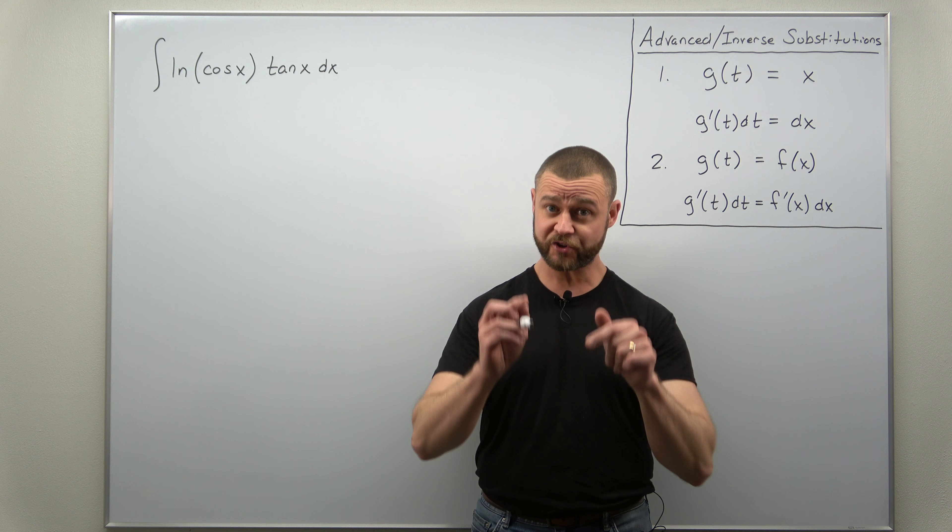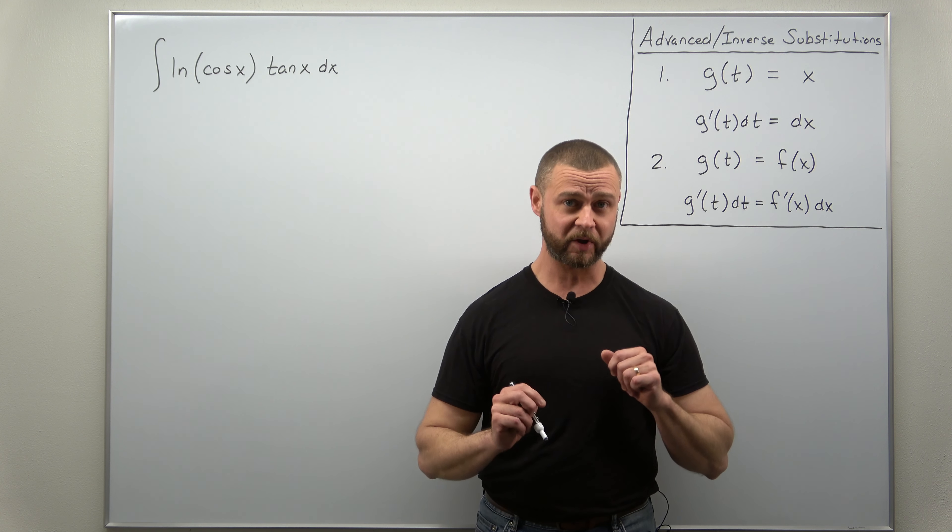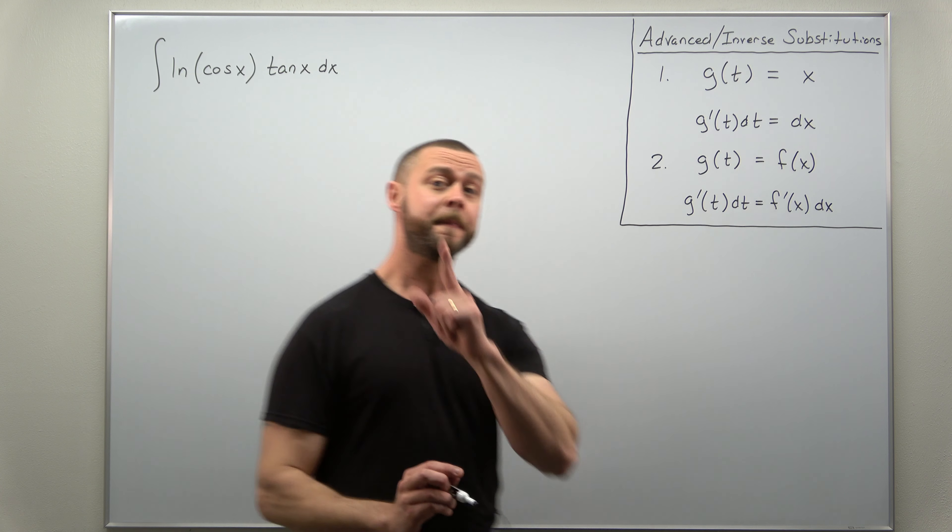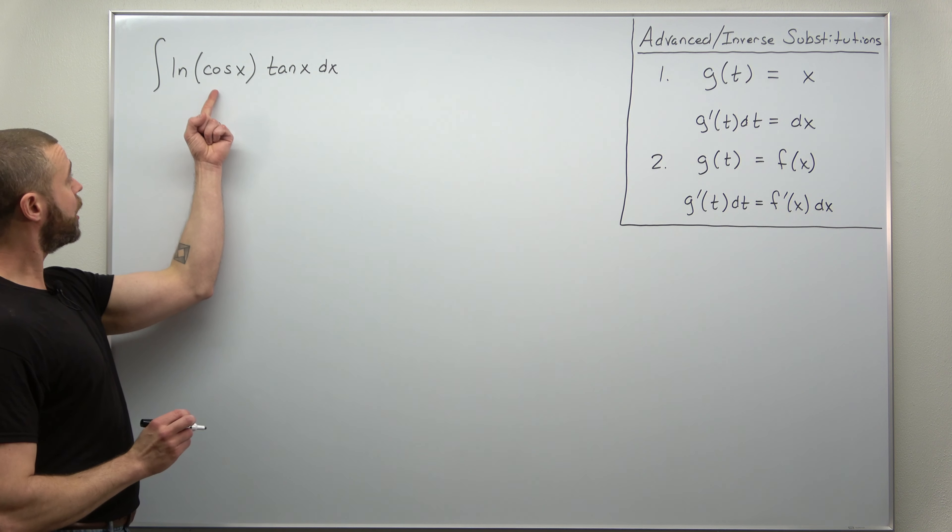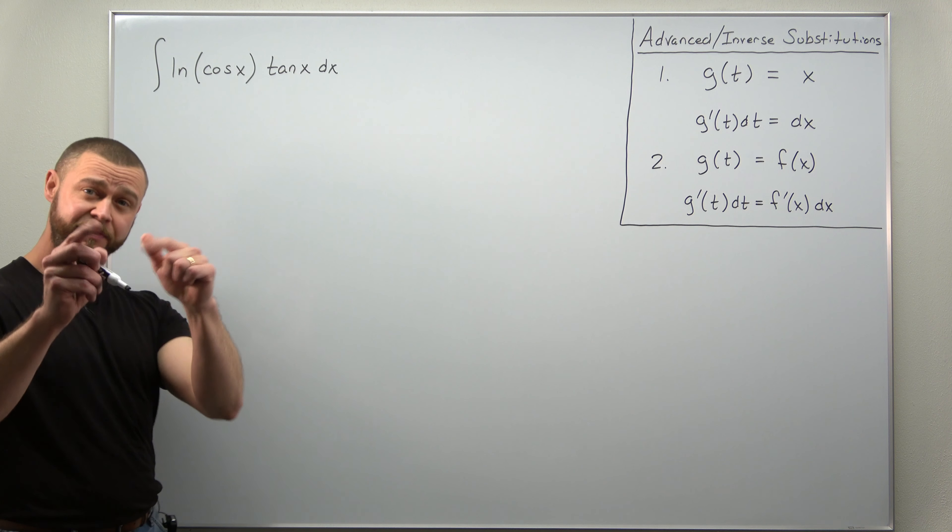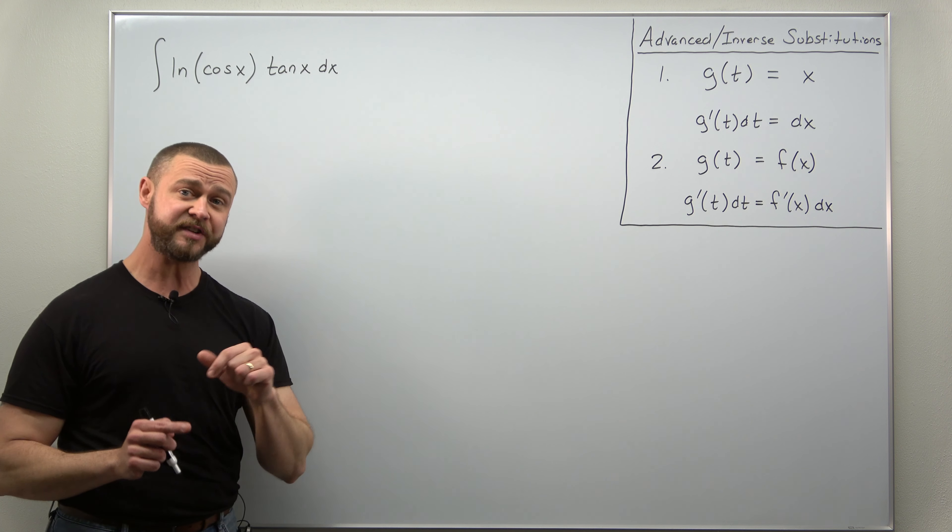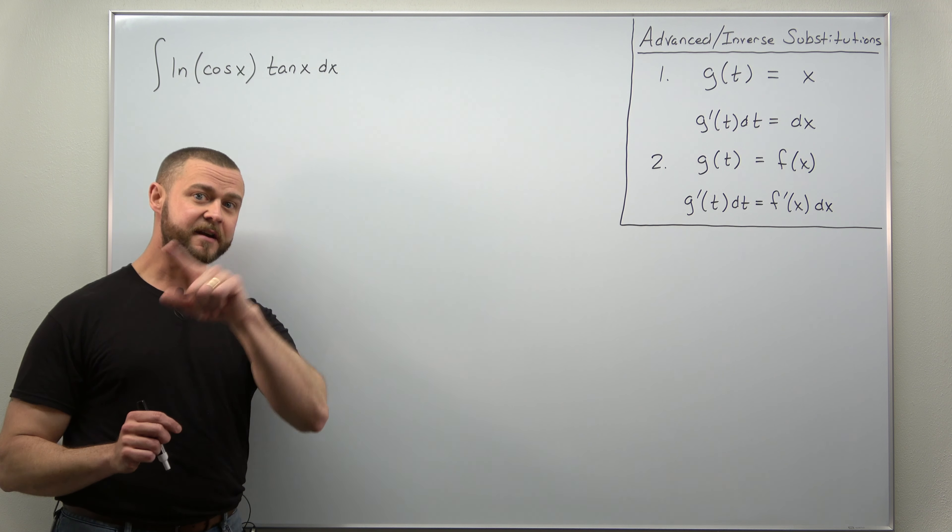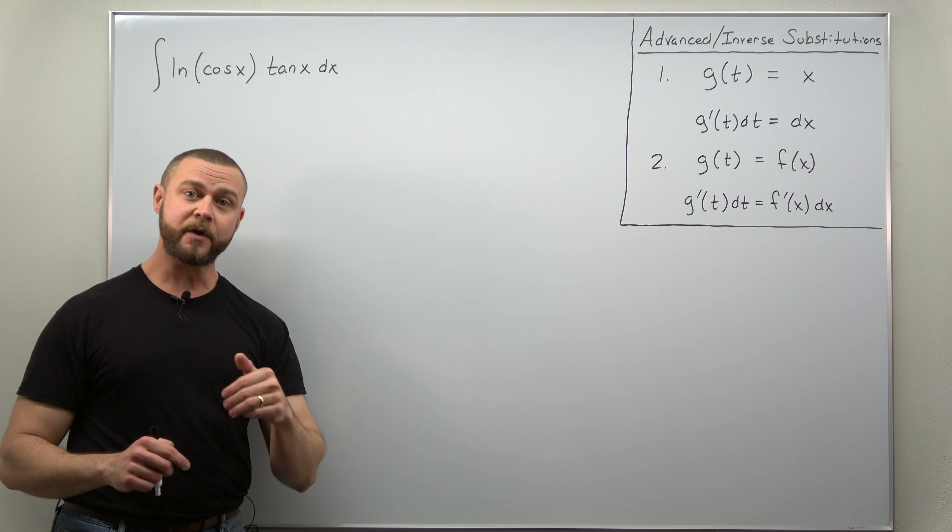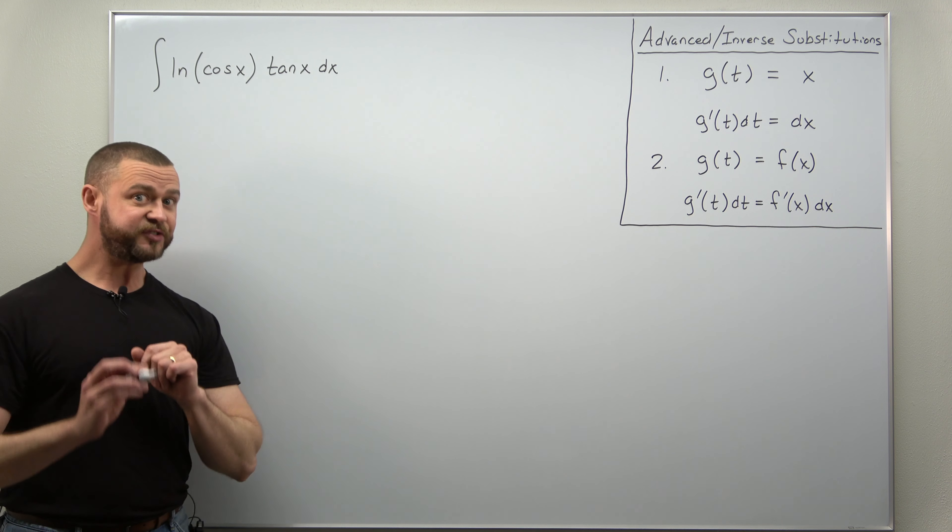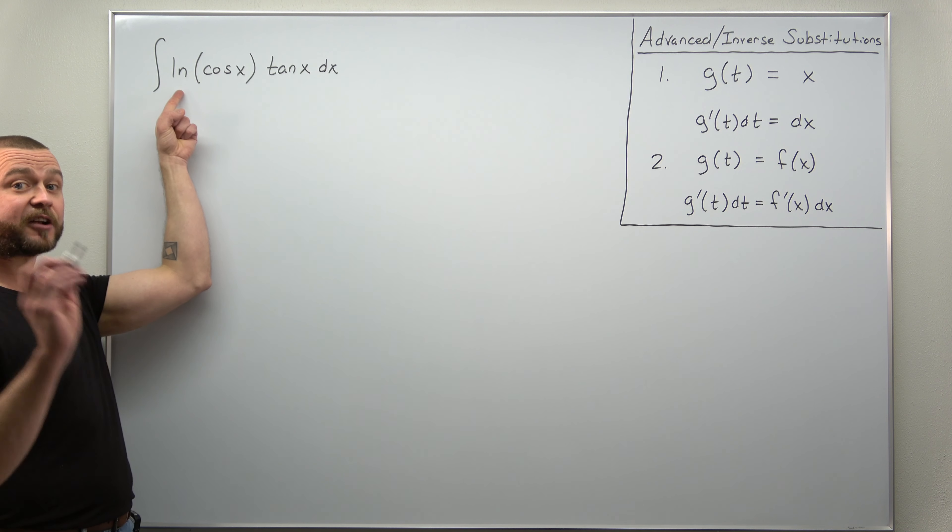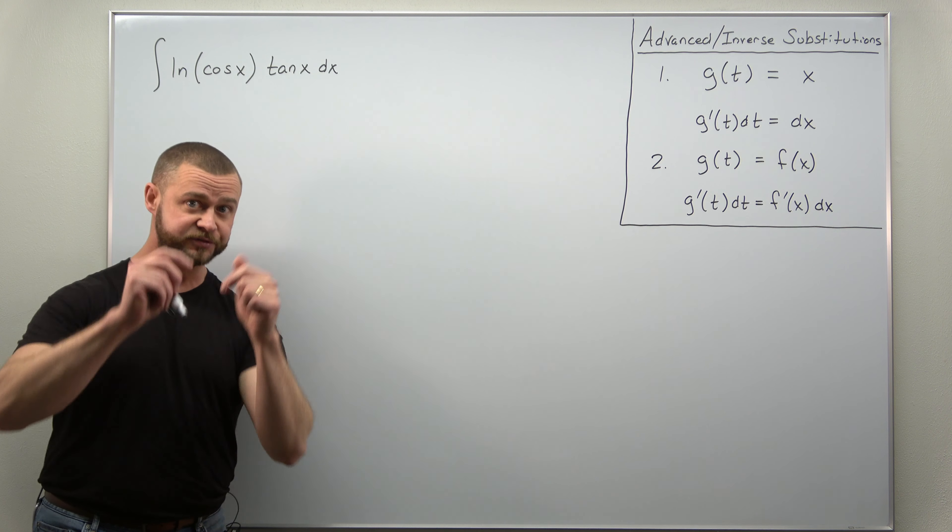Now the integral in question here is certainly very complicated and it's difficult due to the natural log term. If this were just the integral of cosine of x times tangent, think of tangent as sine divided by cosine, the factors of cosine of x would cancel leaving you with the integral of just sine of x. So here this integral is difficult due to the natural log of cosine of x term.